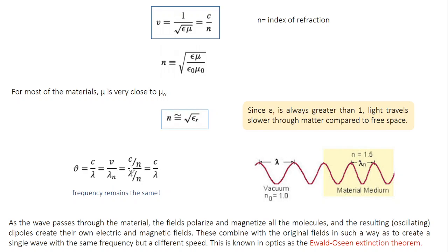Velocity V you can write in terms of C as C by N. Similarly, lambda N is lambda divided by N. So 1 by N, 1 by N cancel. You get the same factor C by lambda. In other words, frequency in free space and frequency inside the material both are C.